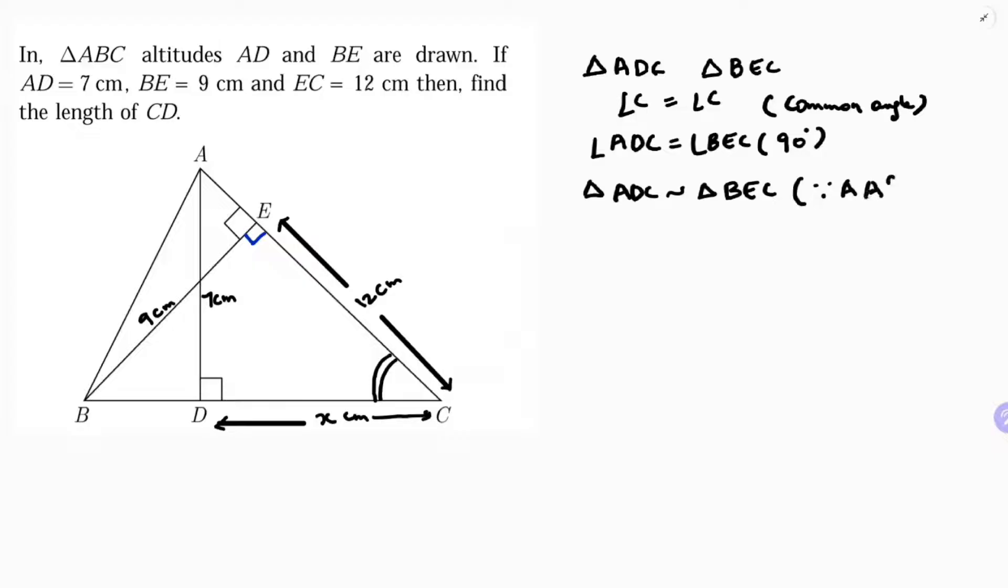Therefore, triangle ADC is similar to triangle BEC by angle-angle similarity. Now I can write the sides as proportional. AD over BE...